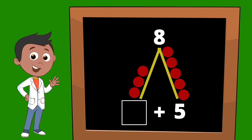Now we have eight circles. How many circles are on the left side? Let's count so we can find our mystery number. Ready? One, two, three. There are three circles on the left side of our Math Mountain, which means our mystery number must be the number three. Wow, great job! Now you've solved two equations with a mystery number as an add-in.